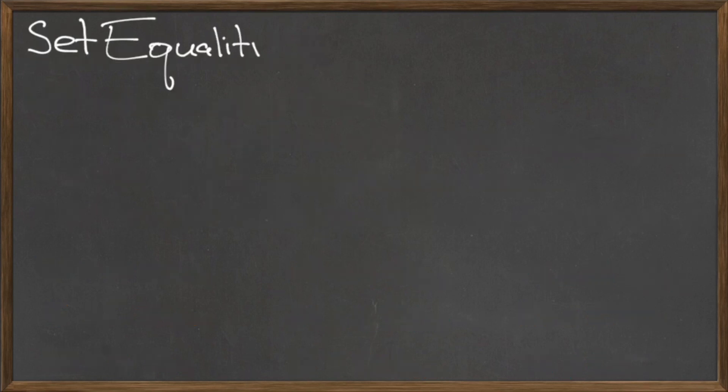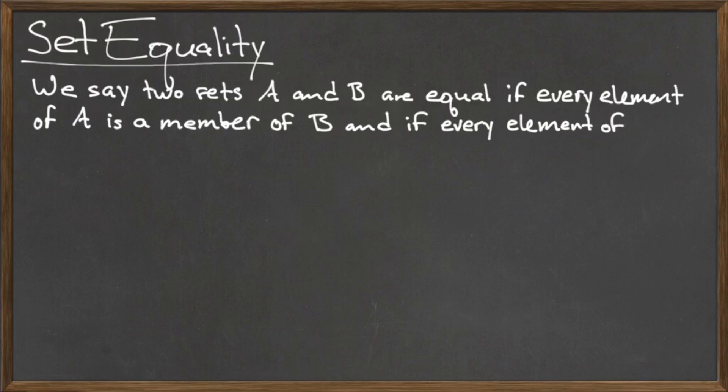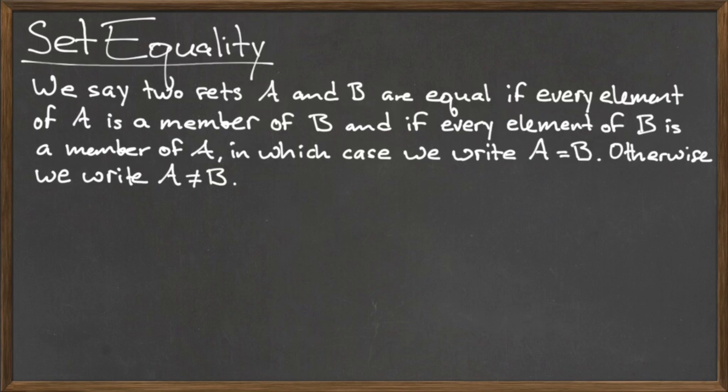The final topic for this video is set equality. We say that two sets A and B are equal if every element of A is a member of the set B, and if every element of B is also a member of the set A, in which case we write A is equal to B. Otherwise, we write A is not equal to B.